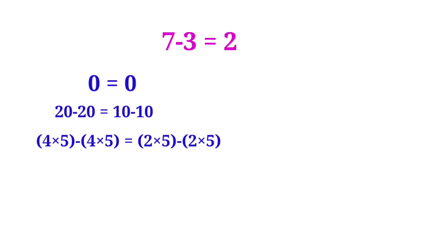Now we can write the 20 as 4×5, and the other 20 also 4×5. And we can write the 10 as 2×5, and the other 10 also 2×5. So 4×5-4×5 is equal to 2×5-2×5.